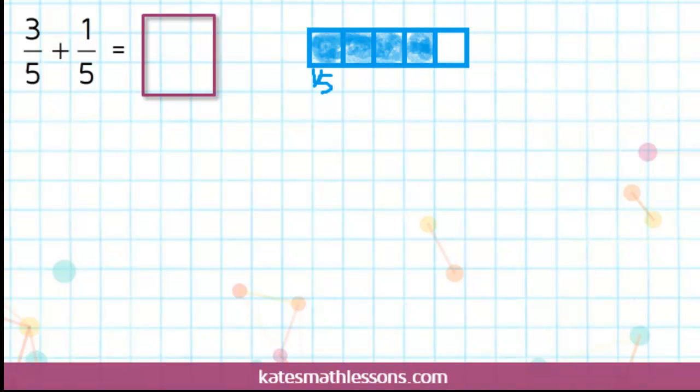I started with 3 fifths, 3 out of 5, and I added in an extra fifth. Now I have a total of 4 out of 5 boxes, 4 fifths of the box.